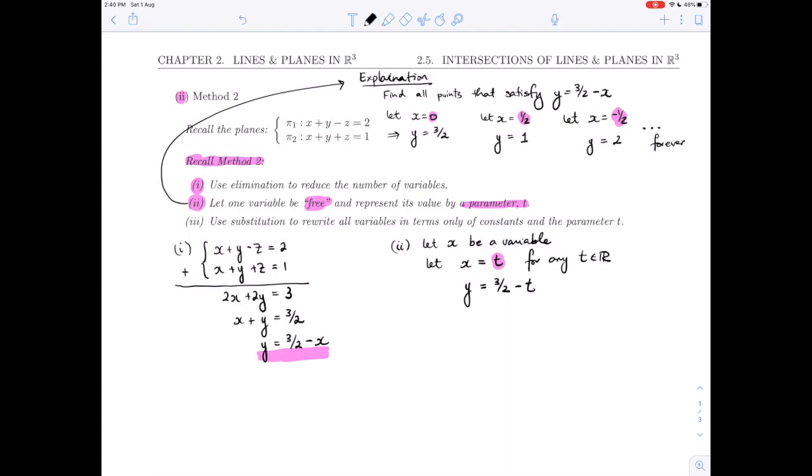So t represents all of our choices. T represents any possible choice, any choice that you could choose. And once you've made that choice, then y is determined in consequence. In this case, we would be saying this is like we had chosen t = 0, this is t = 1/2, this is t = -1/2 and so on. A free variable is a variable that one can choose the value of and one represents the choice by a parameter t. That's why we say t can be any value in R. Any value that you choose for t, you can then calculate what the value of y has to be.